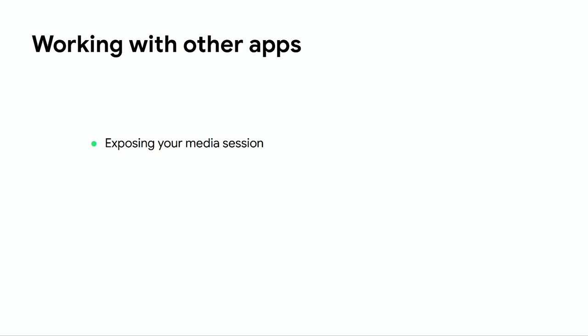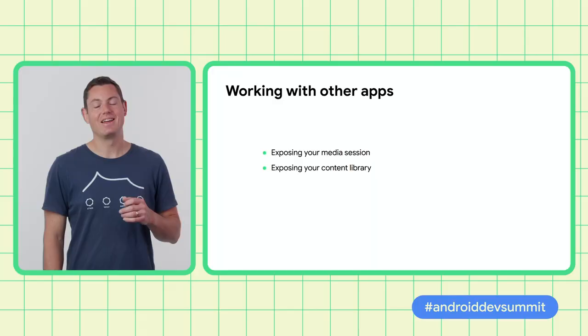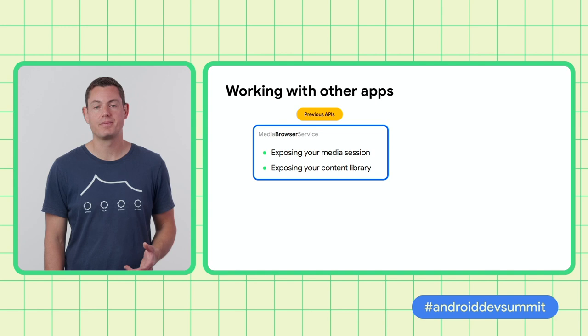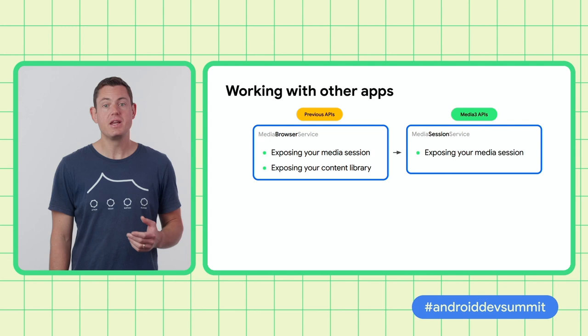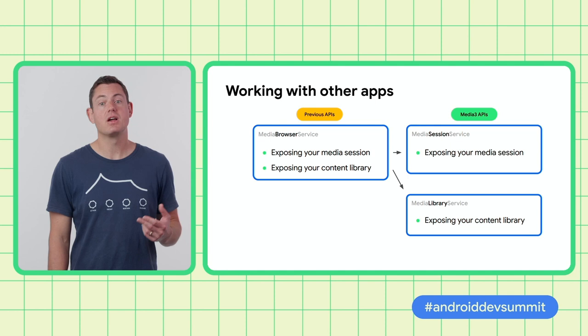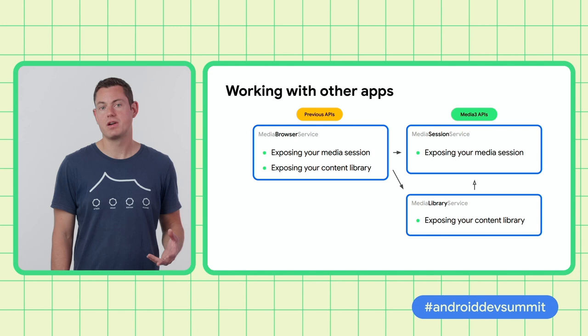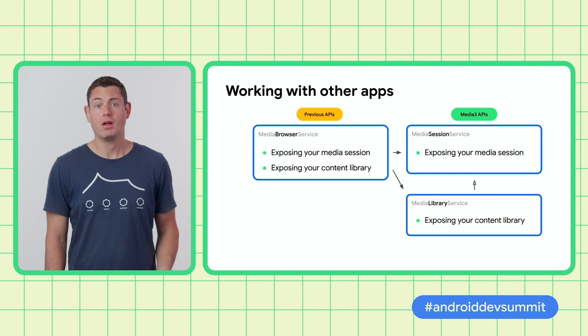Now let's talk about how your app can work with other apps and the Android system. There are two main use cases: firstly, exposing your media session so that other apps can control your media player; and secondly, exposing your content library so other apps can provide their own UI for it. In our previous media APIs, both these goals are achieved using a media browser service. In Media 3, they are achieved using two separate classes. A media session service is used to provide access to your media session, and a media library service is used to expose your content library. Media library service actually extends from media session service, so it can achieve both these goals.